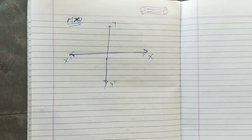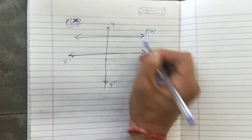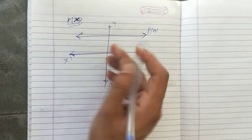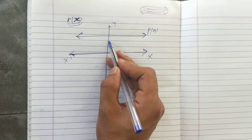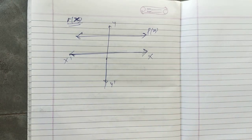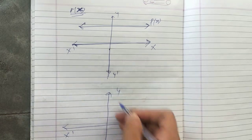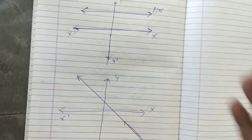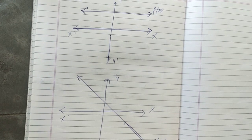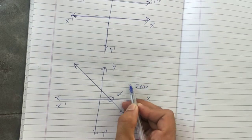To find the number of zeros from a graph, count how many times the graph intersects the x-axis. For example, if the graph of p(x) does not intersect the x-axis at all, there are no zeros. If the graph is a straight line and intersects the x-axis only one time, then it has exactly one zero.